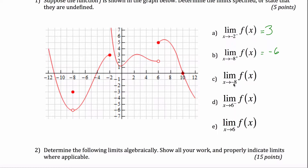What about the limit as x approaches negative 8, with no side specified? If it doesn't tell you the positive or the negative side, you consider it as two separate problems. From the positive side we already got negative 6, and from the negative side it looks like we're also approaching negative 6. If the two one-sided limits are equal, then the two-sided limit is also equal to that number, so negative 6 is the answer — not negative 3. F of negative 8 would equal negative 3, but that's not what's being asked here.